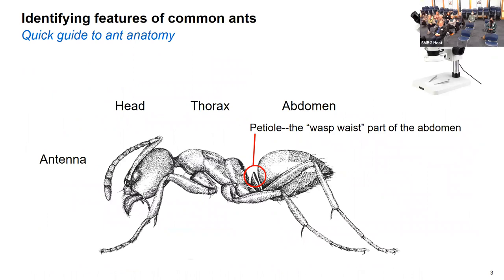Getting into the ant identification part — these are the main identifying features of an ant. If you find one in your garden or garage, they have antennae, a head, a thorax, and an abdomen. Most of us are getting older, and to really identify these anatomical features you almost need a dissecting microscope, which you can find on Amazon or eBay for pretty cheap. I have one that I use for taking splinters out, looking at bees, looking at ants — it's fun to have at home.